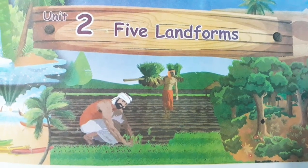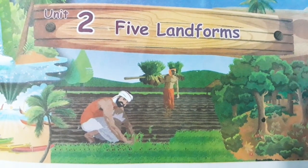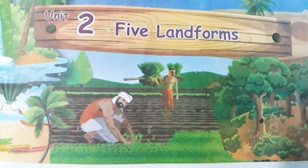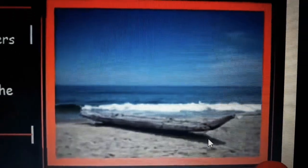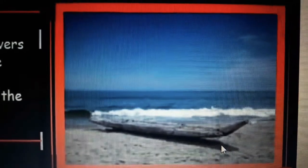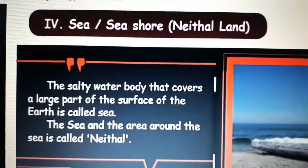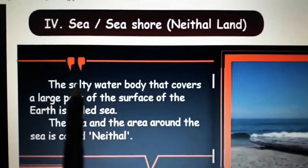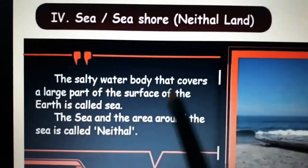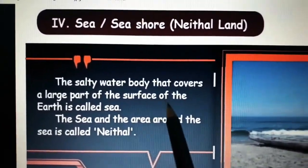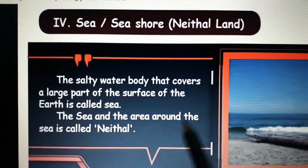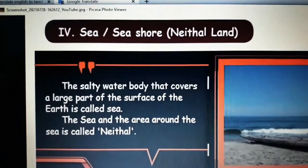Before going into that, let's recollect the 4th landform discussed in the last class. Look at the picture, students. Do you remember what land this is? Yes, very correct — that is the sea, or Neidhal land. The salty water body that covers a large part of the surface of the earth is called the Sea. The sea and the area around the sea is called Neidhal.